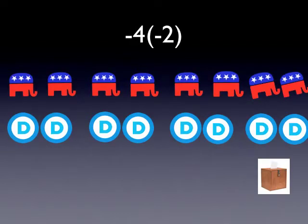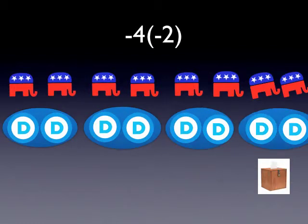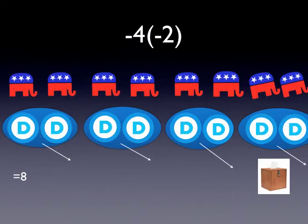And finally, here's our last problem: minus four minus two. There are four pairs from both parties, meaning that they are at a tie. However, the Democrats changed their vote and all voted in favor of the Republicans. Altogether, it equals eight. More results of the current presidential elections will be coming shortly. Thanks for watching.